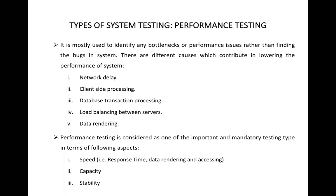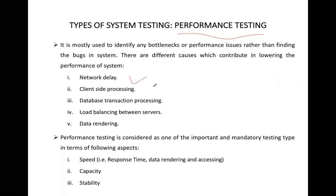Now let's look at the types of system testing. The first is performance testing, where we identify bottlenecks in performance — where performance is getting slowed down. This covers network delay, client-side processing, database transaction processing, load balancing, and data rendering. The three major terms covered in performance testing are speed, capacity, and stability.